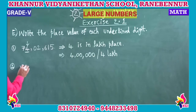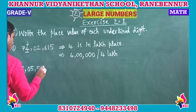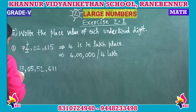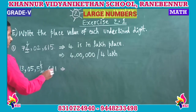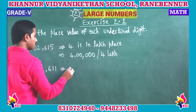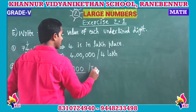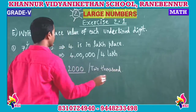The second number is 13,05,52,611. Here we are underlining this 2. We will go directly to the place value. Once 10 is 100 - this 2 is in the 1000s place. So the place value of 2 is 2000. We can also write the number name: 2000 is the place value of the given underlined digit.